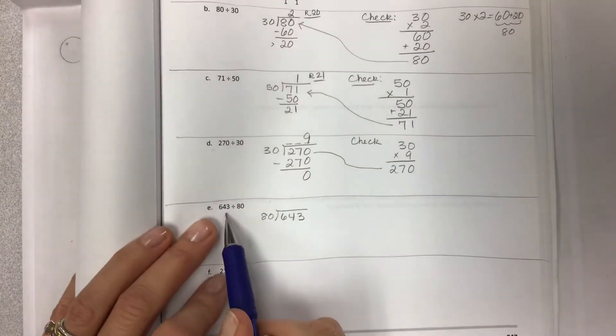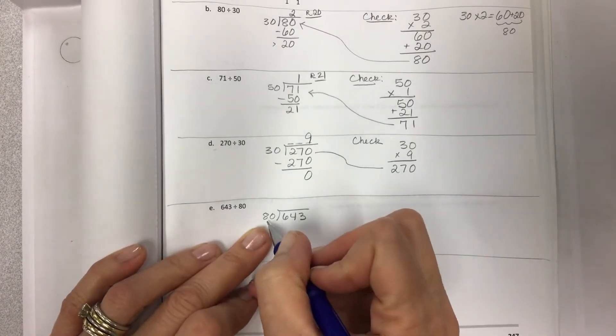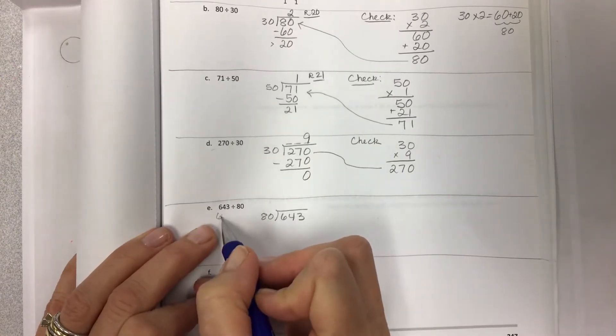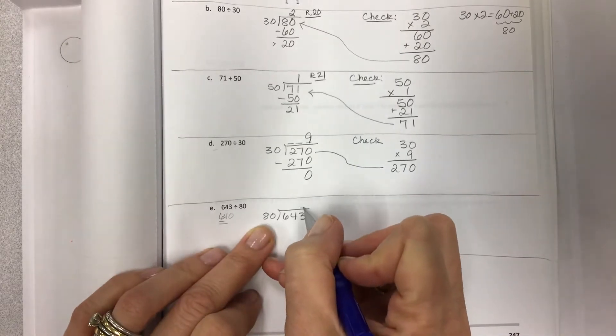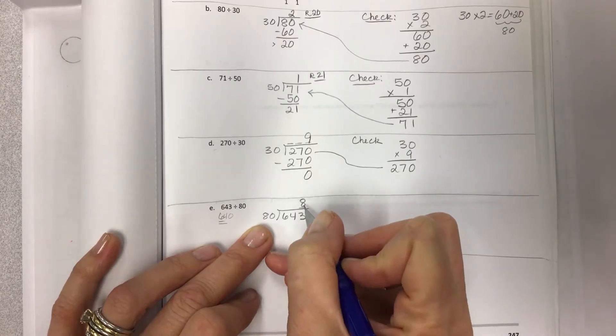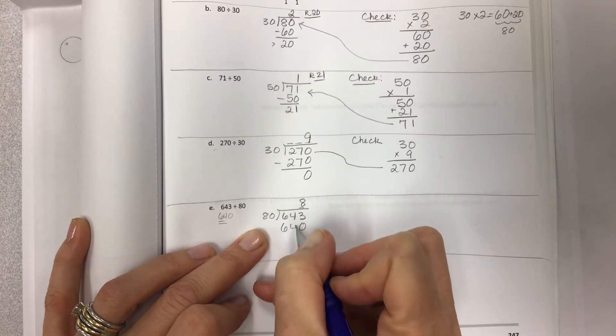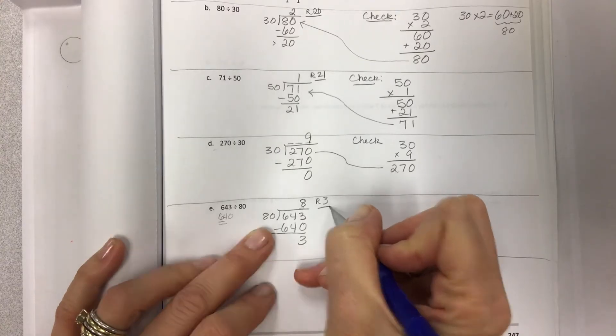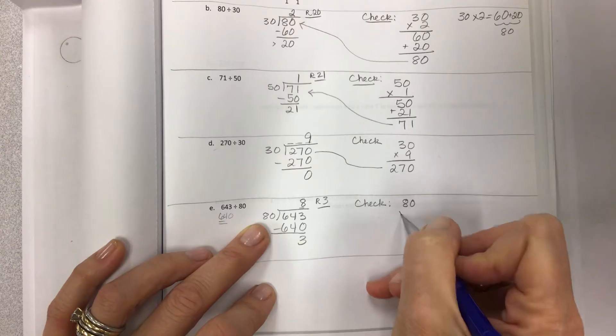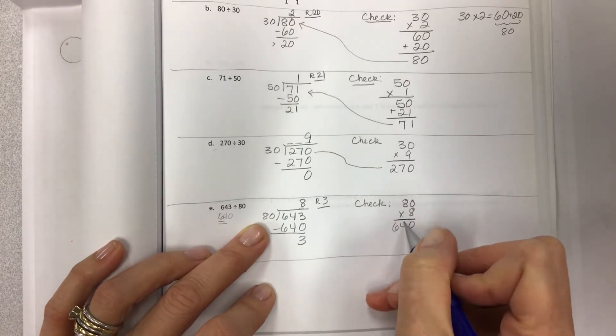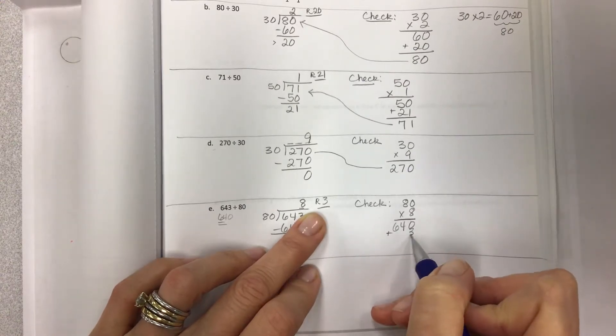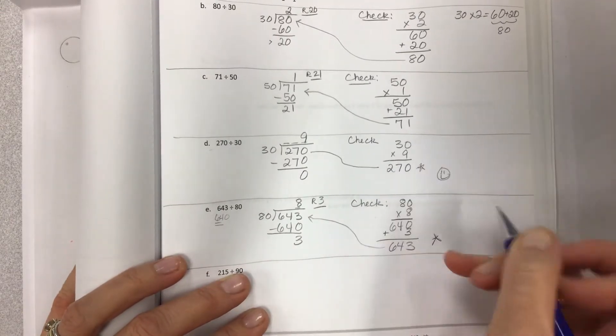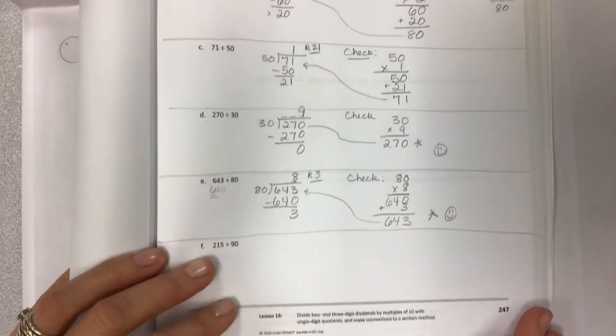80 into the 643, and remember, we're not estimating these today. Don't estimate. Actually do the division. So how many times can I fit 8 into 643, and you might be thinking, a compatible number would be 640 because 64 is a multiple of 8, and I would say bravo. In the ones place, you can put your 8. 8 times 0 is 0. 8 times 8 is 64, so we got as close as we could get without going over. Do your subtraction and see that there's a remainder of 3. In the check, 80 times 8. 8 times 0 is 0. 8 times 8 is 64, but add the remainder. Then you get 643. Compare it, and we're happy, and every time you compare, you can put a little star or happy face or whatever makes you happy because I'm happy that we got the right answer.